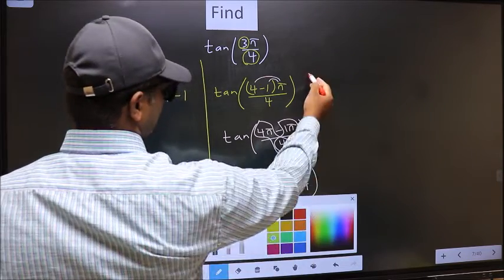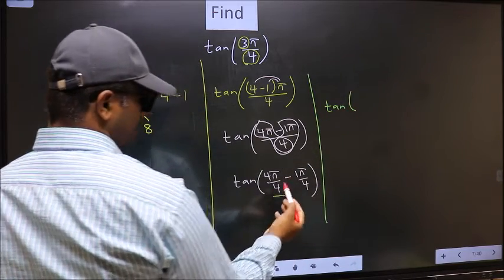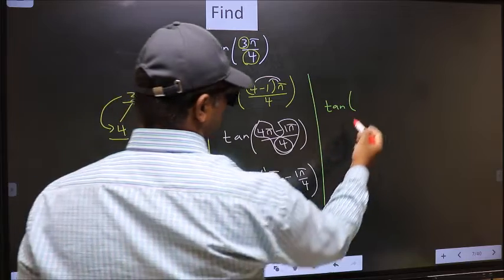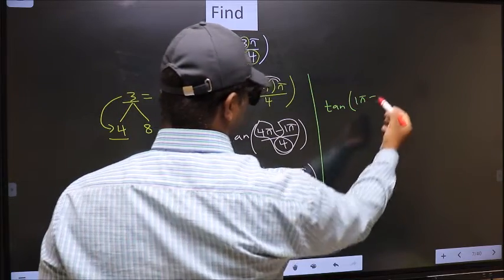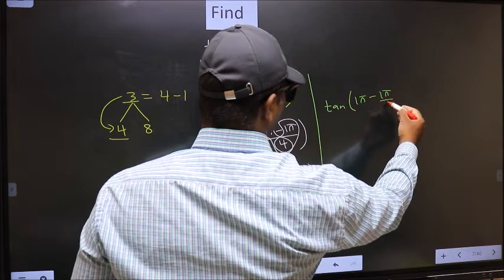Next, tan. Now over here, you should cancel. 4 ones, 4 ones. We get 1π minus this no change, 1π/4.